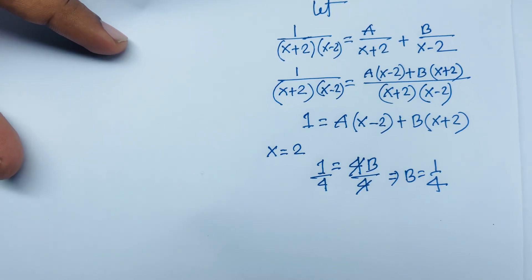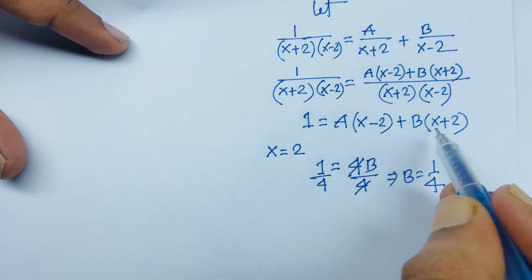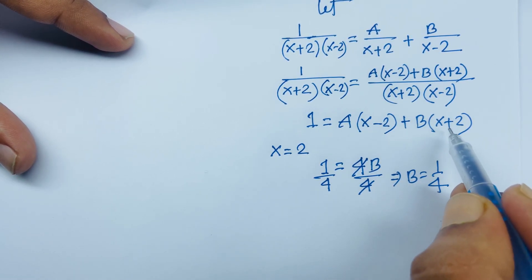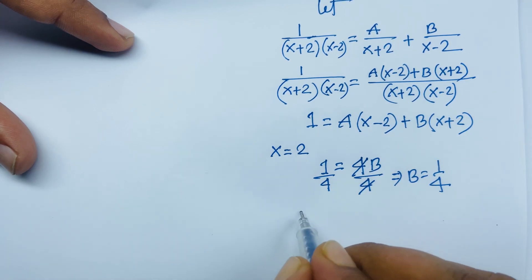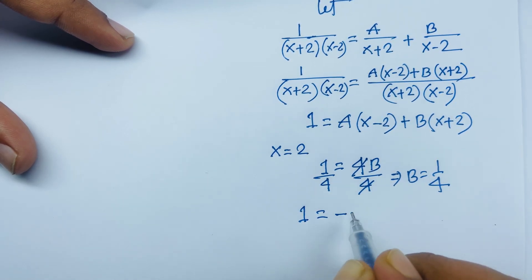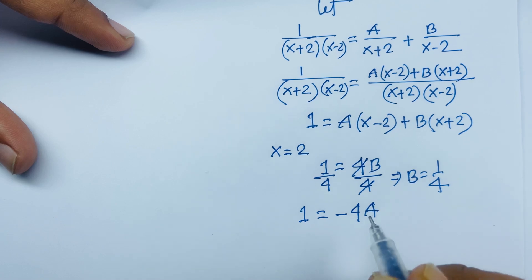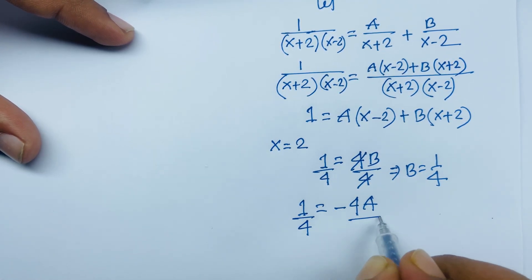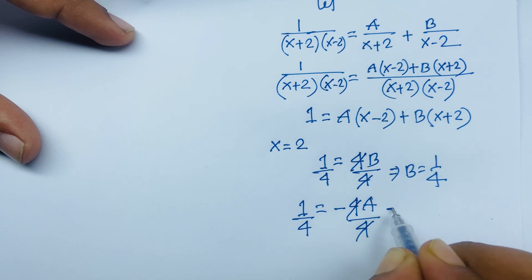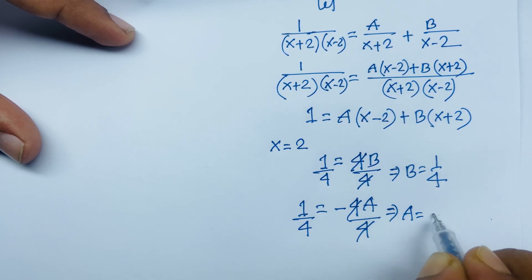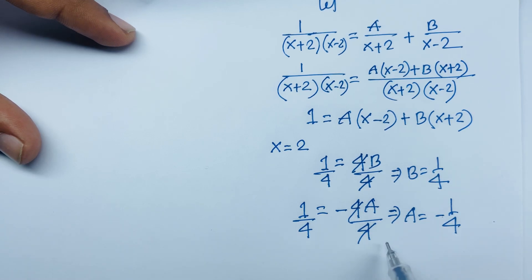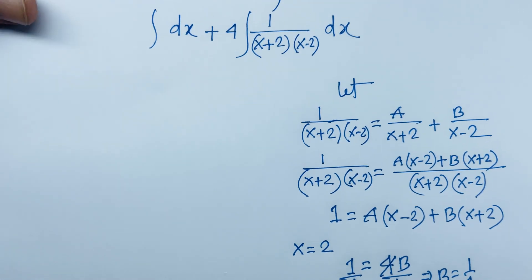To find A, we substitute x equals negative 2. The B term becomes zero since (minus 2 plus 2) equals 0. So 1 equals minus 4A, and dividing both sides by 4, we get A equals minus 1/4. So A equals minus 1/4 and B equals 1/4.